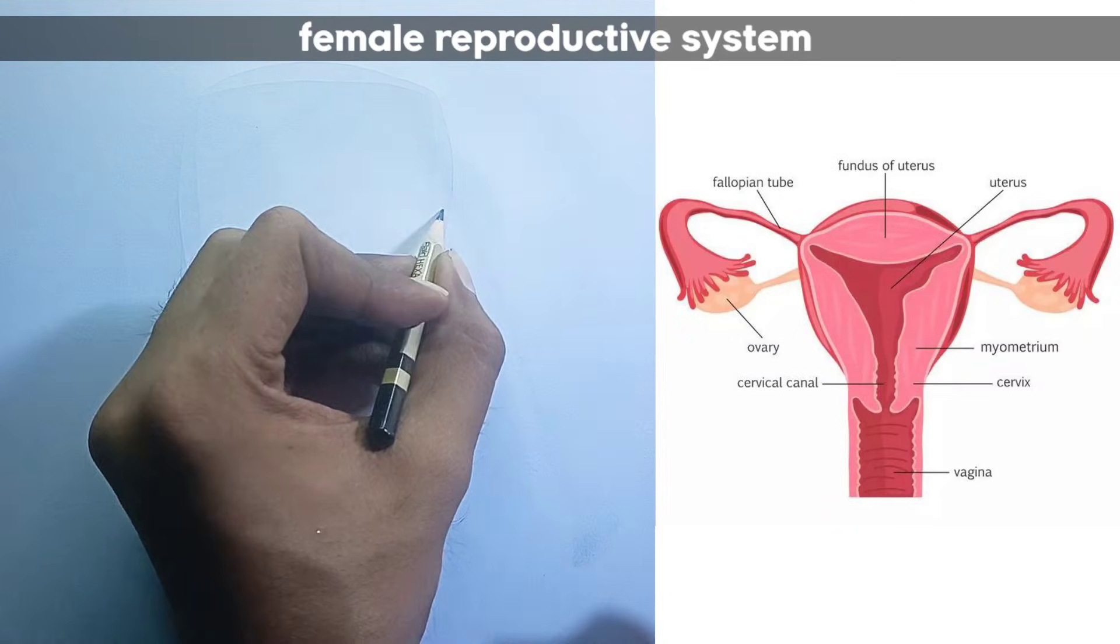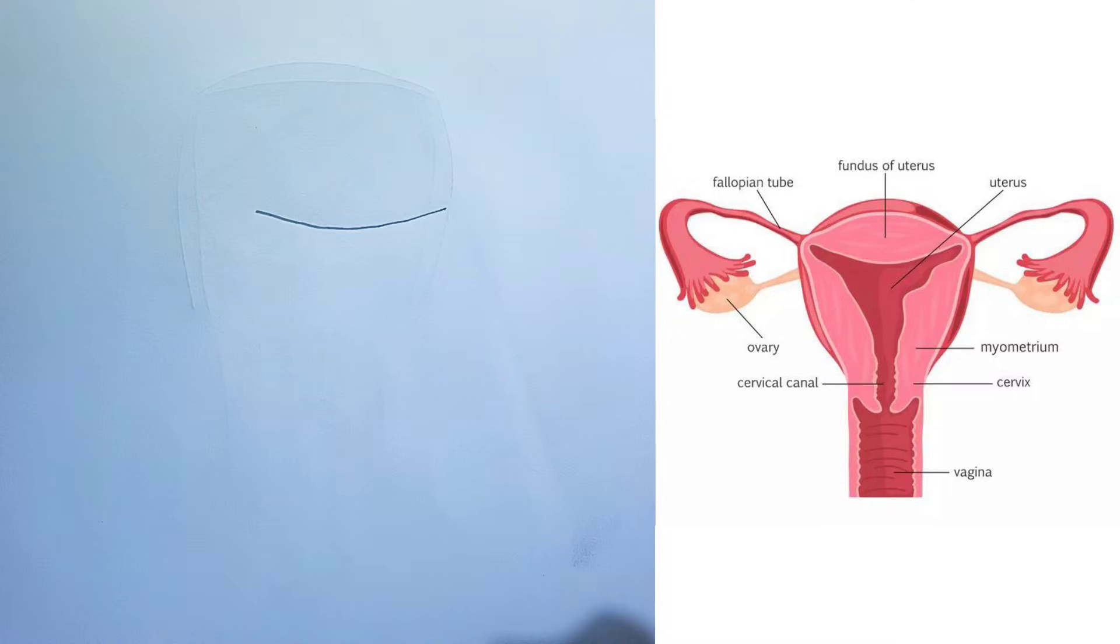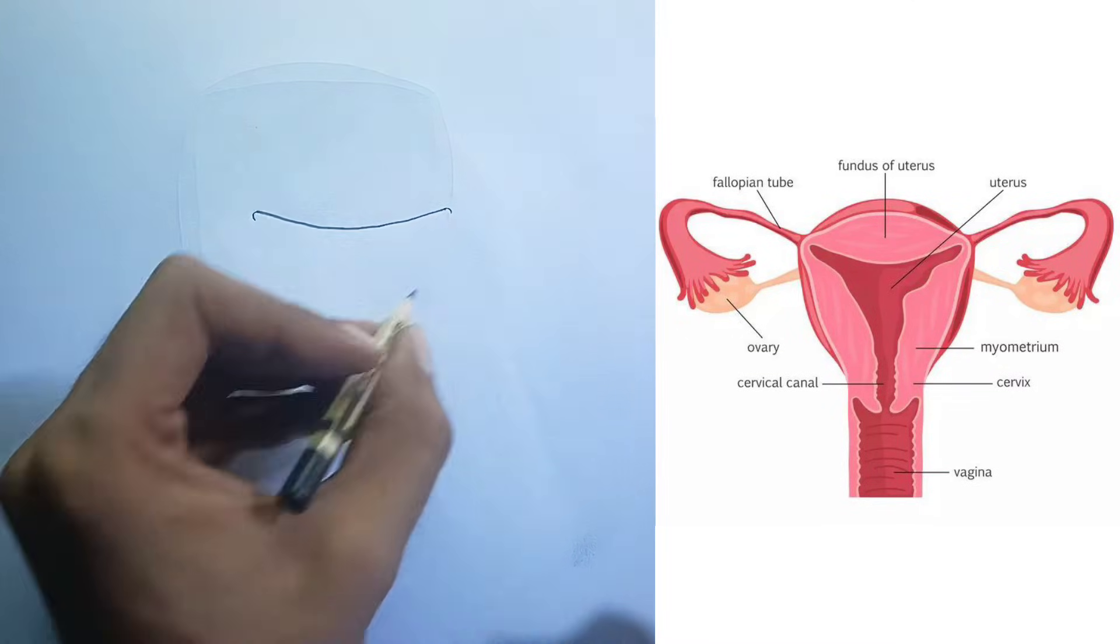This diagram illustrates a simplified view of the female reproductive system, specifically focusing on the internal organs. Here's an explanation of the labeled parts.